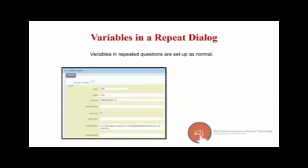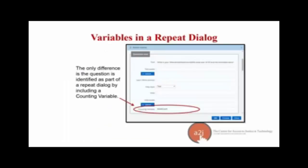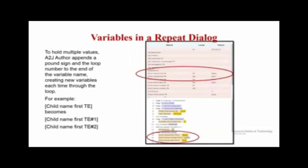Variables in a repeat dialogue are set up as normal. Here, 'child first name TE' is in a repeat dialogue and will be asked multiple times, but it is set up completely normally — it's a text variable. The only difference is that the question is identified as part of a repeat dialogue by including the counting variable in the question text section. To hold multiple values, A2J Author adds a pound sign and the loop number to the end of the variable name, basically creating new variables each time you go through the loop.